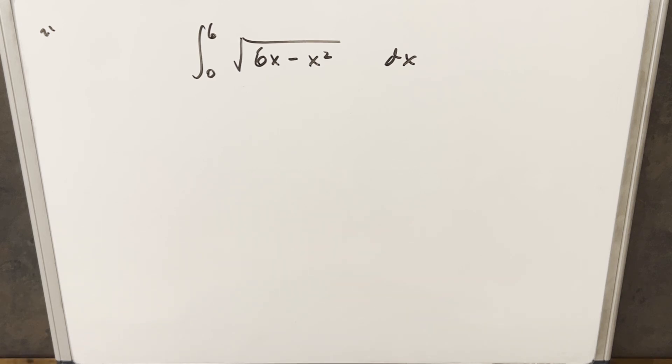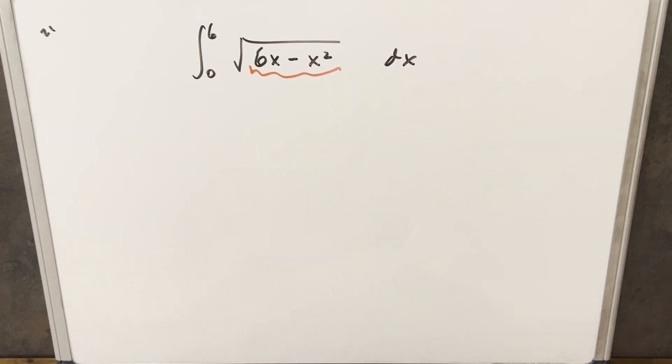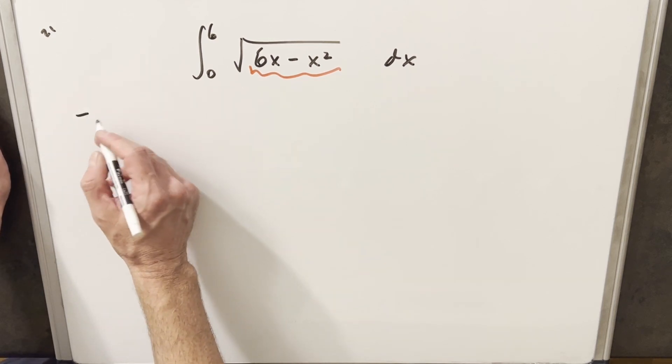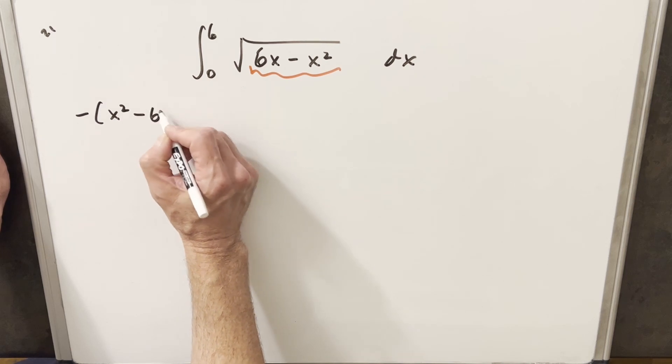Now this is a problem I actually just did recently, but I did it with trig substitution, and I wanted to do this a different way. So what I'm going to do is take this 6x minus x squared and try to complete the square on that. I'm going to factor a minus out just because I like to have the x squared in front.